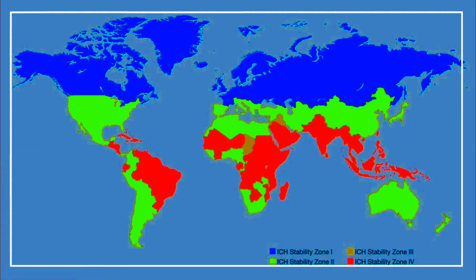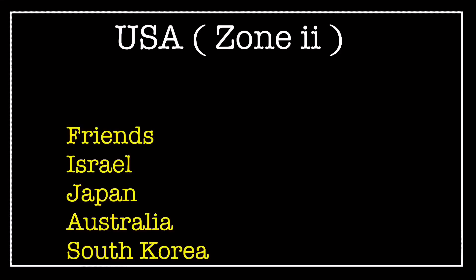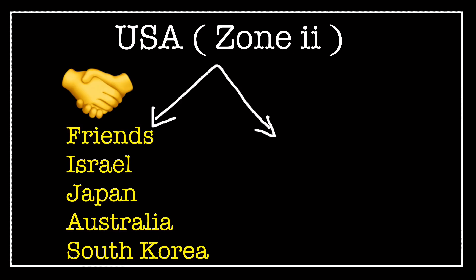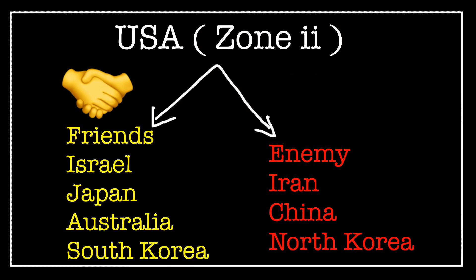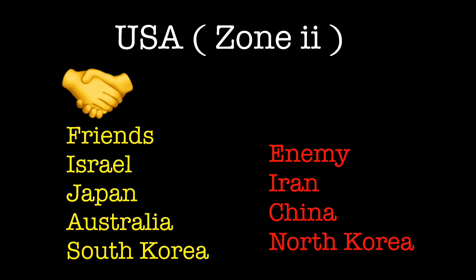Now I will tell you a trick to remember some countries and their climatic zones. Starting with the USA: its best friend countries — Japan, Australia, Israel, and South Korea — are all in zone 2. And the enemies of the USA — China, North Korea, and Iran — are also in the same zone 2. So whatever country is a friend or enemy of USA, they share the same climatic zone.